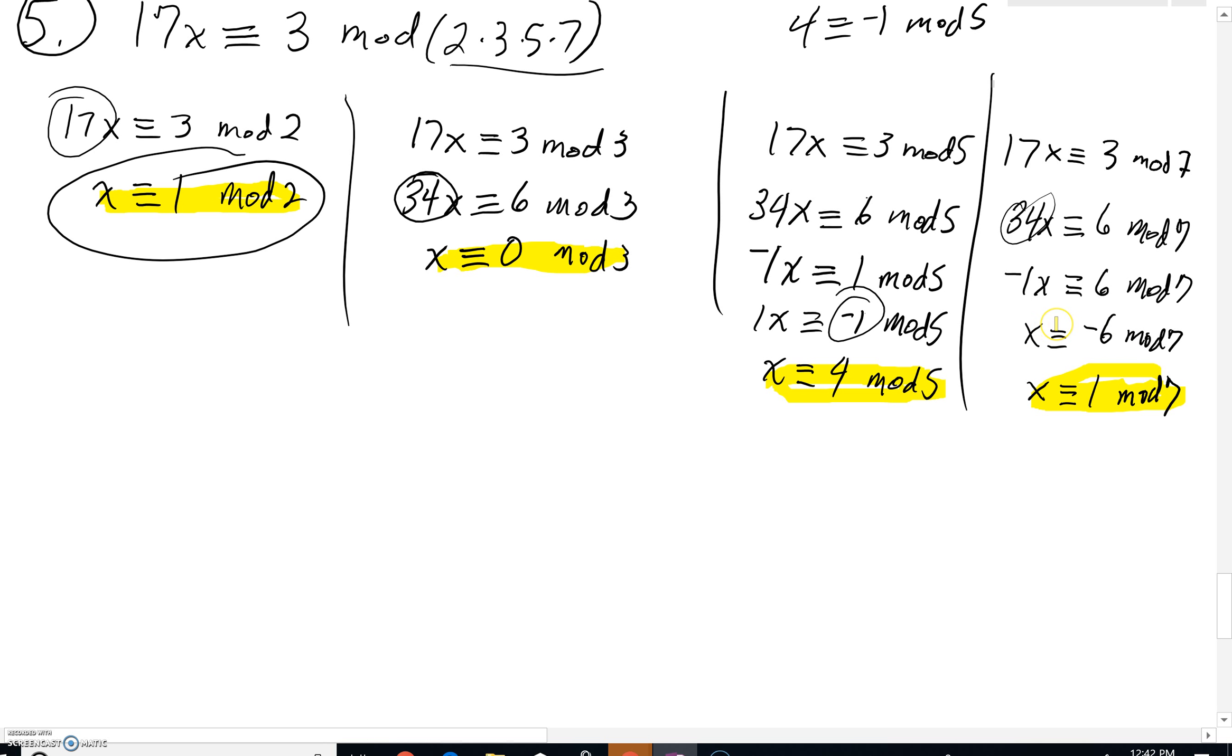We've got a sub 1 is going to be 1. There's your a sub 1. And by the way, we could take our n sub 1. n sub 1 would be all of our mods except the 2. So it's going to be the 3, the 5, and the 7 multiplied together. And that's going to be 105.